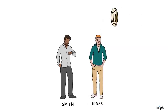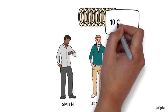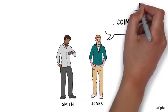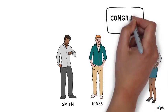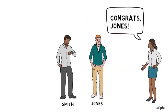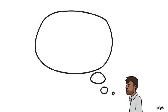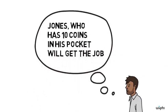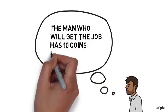As they're maybe starting to get bored, Jones counts out loud how many coins he has in his pocket — exactly 10, they discover. Jones puts the 10 coins back in his pocket as the president of the company comes into the room. The president congratulates Jones, announcing that he's a great fit for the position. As Smith leaves the room disappointed, here's something that he believes: Jones, who has 10 coins in his pocket, will get the job. From this, Smith concludes that the man who will get the job has 10 coins in his pocket.